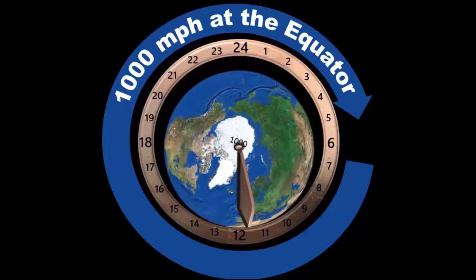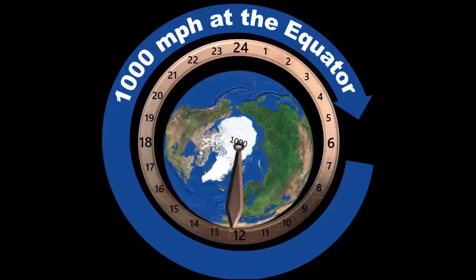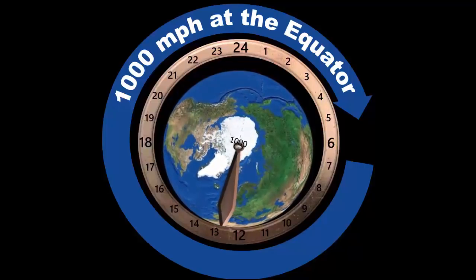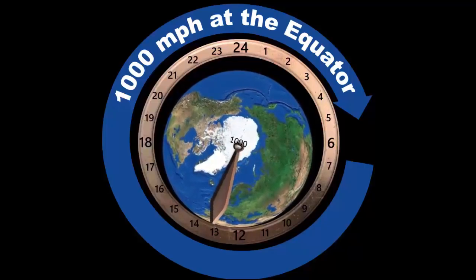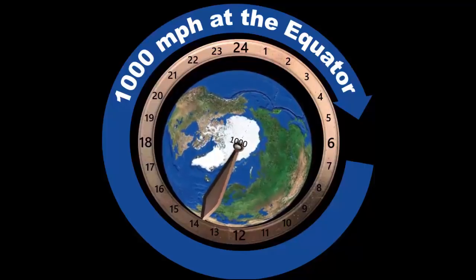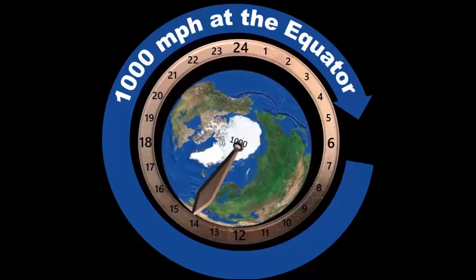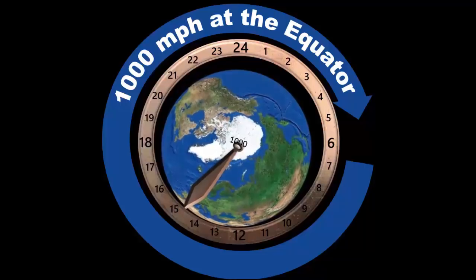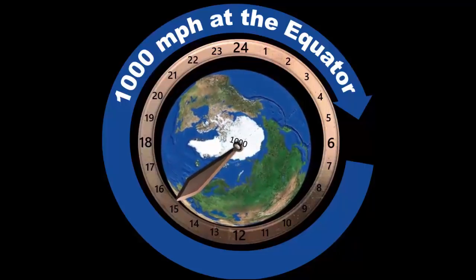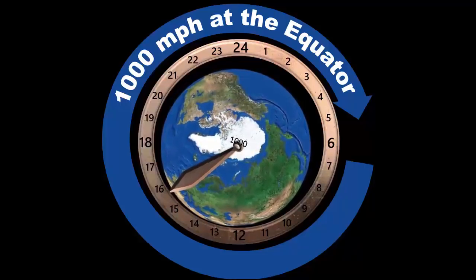But what they're not telling you is that the hour hand starts at the center of the Earth and shoots out to the equator. And at the equator, the Earth's radius is supposed to be 4,000 miles. So at the equator, the hour hand is now moving at 1,000 miles per hour. Would you feel that? Well, I would think so.